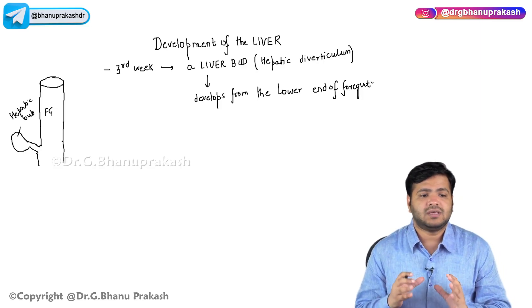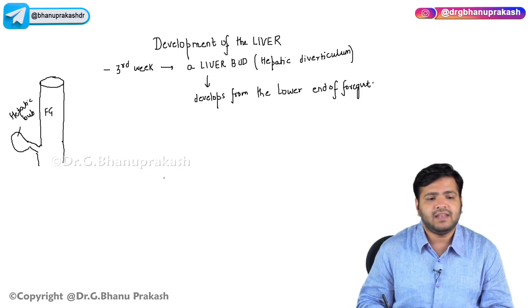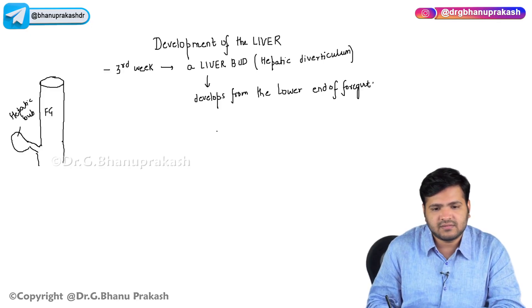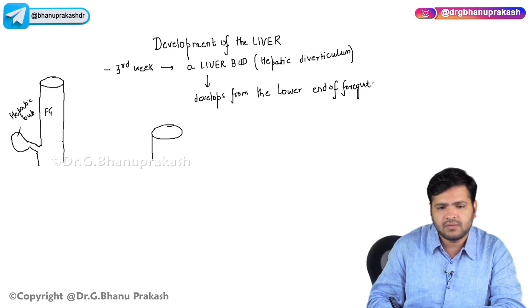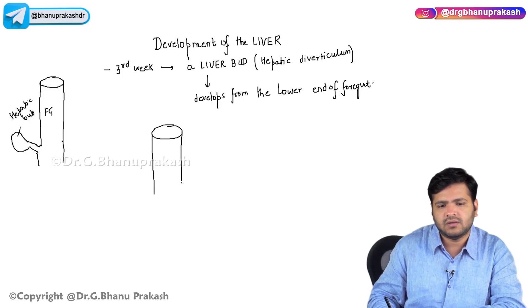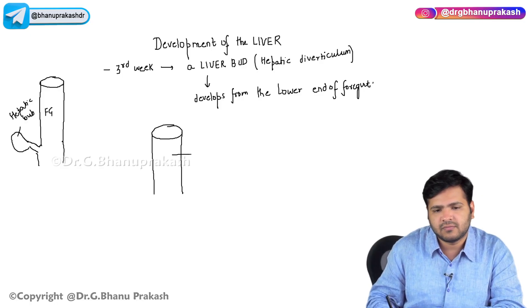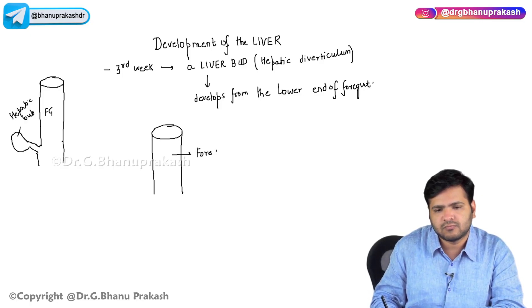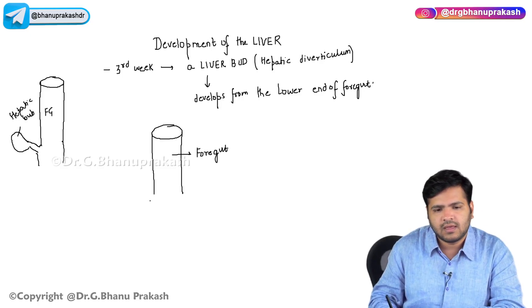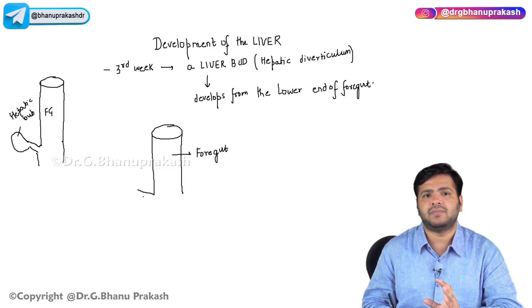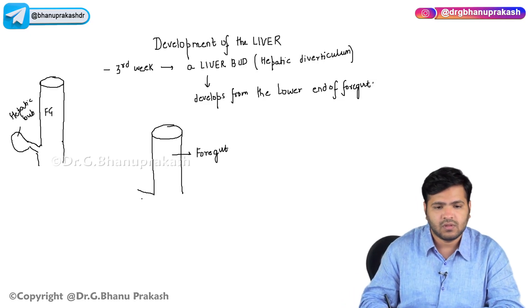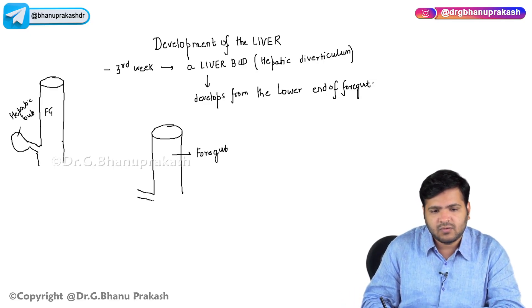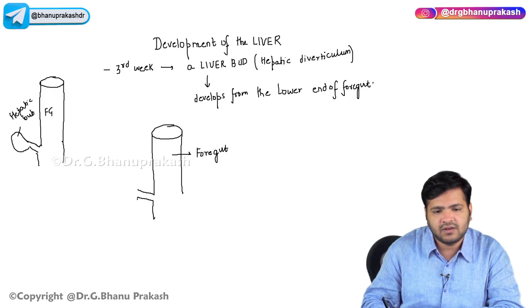A liver bud or hepatic diverticulum develops from the lower end of the foregut. Now the liver bud or the hepatic bud will divide into two parts.